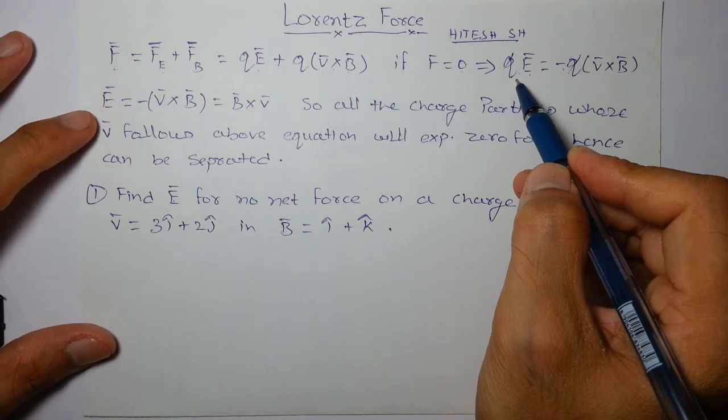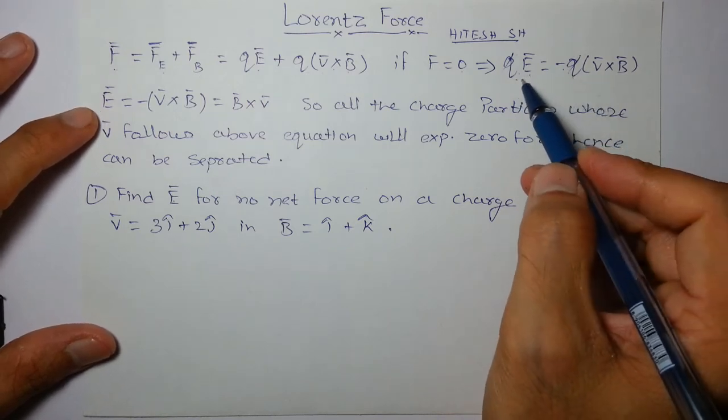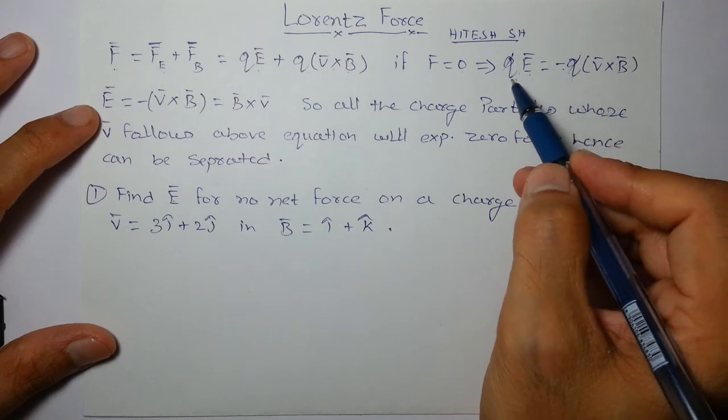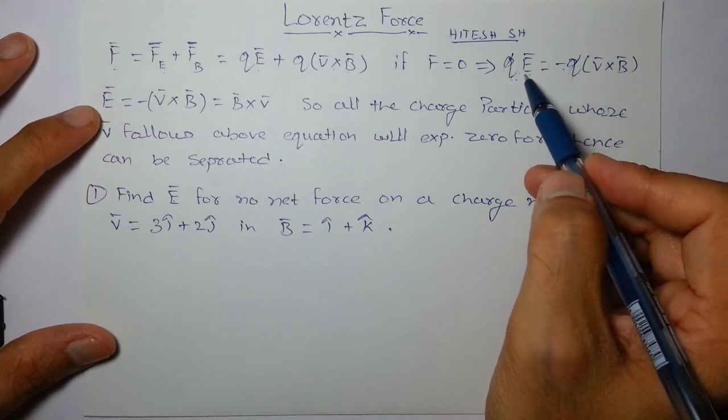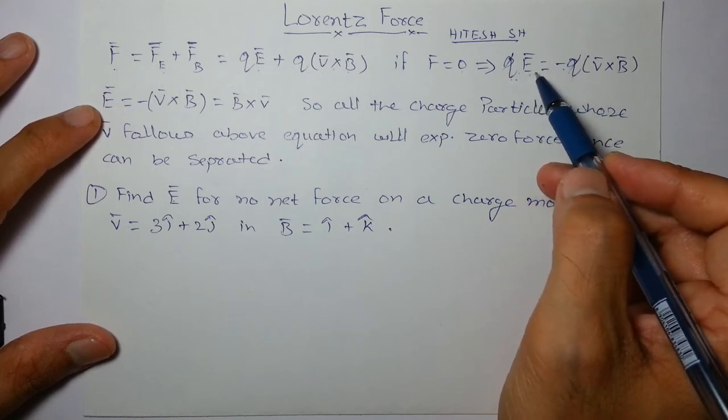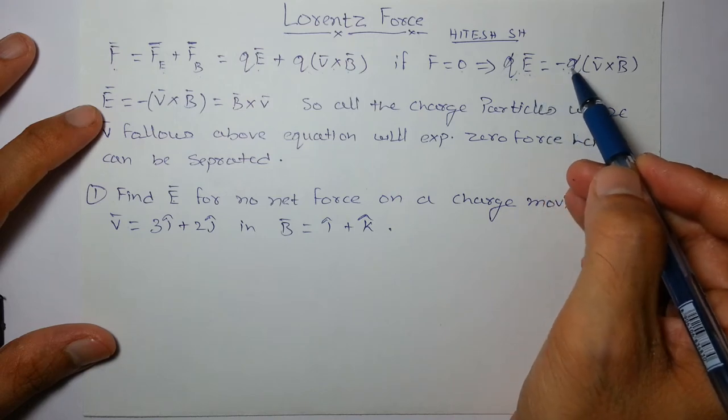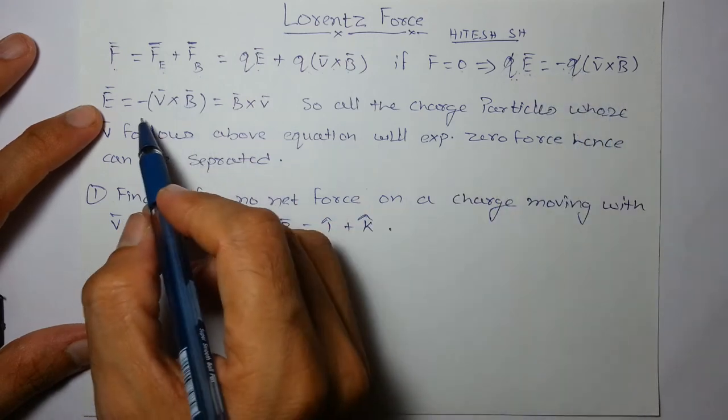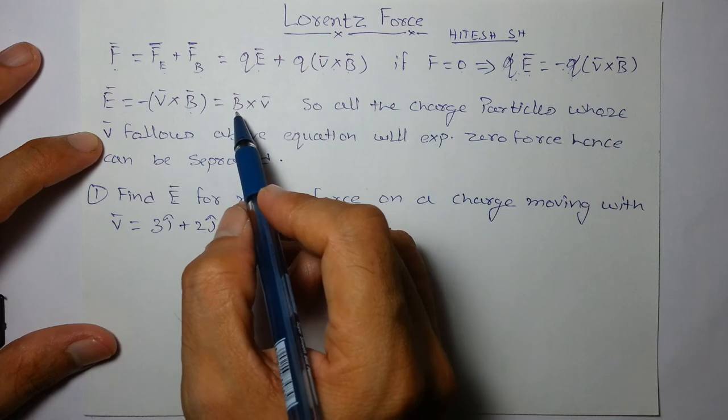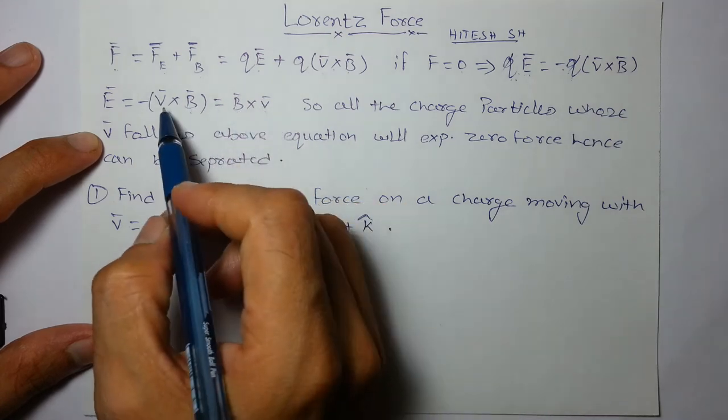Okay, at least particle must be charged. It should not be uncharged. Otherwise, we cannot cancel by zero. So in the case when particle has some charge, E is equal to minus V cross B or E is equal to B cross V.